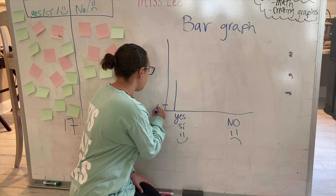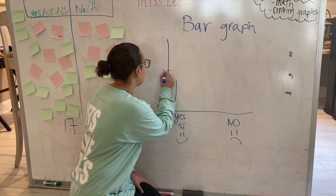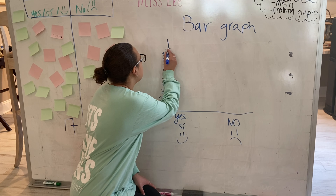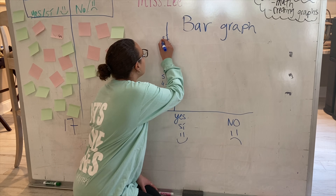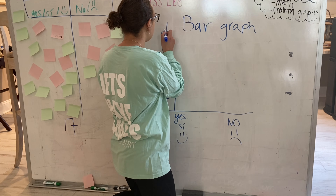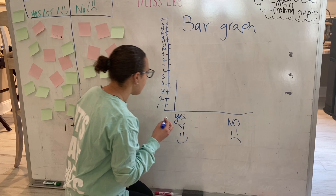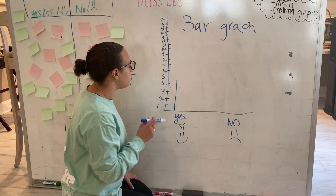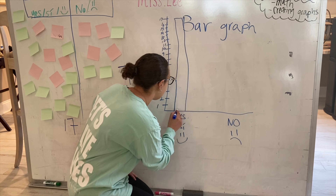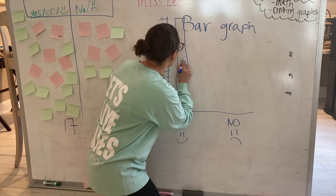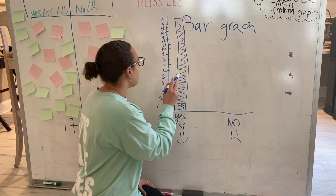So let's label the numbers. We said seventeen students liked the food. Let's color that in. And how many students did not like the food? Seven. So let's create seven.